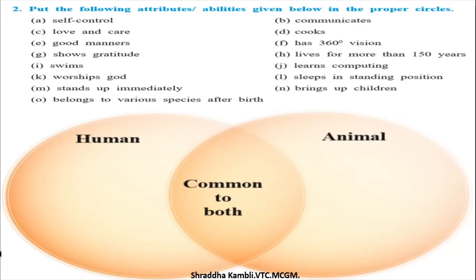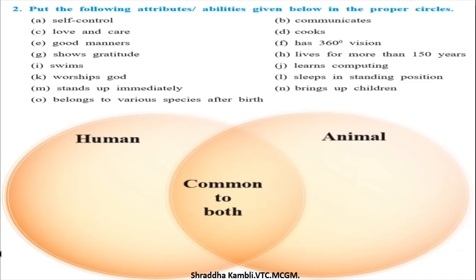There are qualities listed from A to O: self-control, communicates, love and care, cooks, good manners, has 360-degree vision, shows gratitude, lives for more than 150 years, swims, learns computing, worships God, sleeps in standing position, stands up immediately after birth, and brings up children. Some belong to humans, some only to animals, and some are common to both groups.